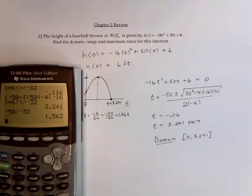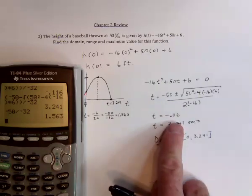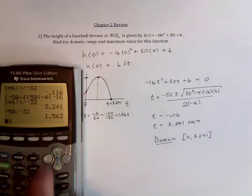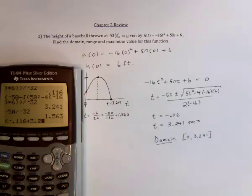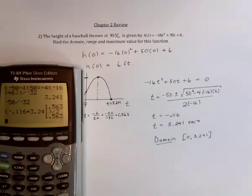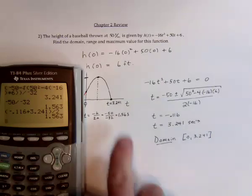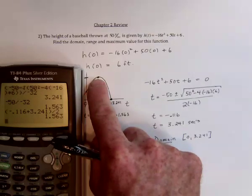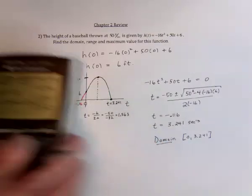And I just want to show you if I did it the other way and found the average of these two, it's going to end up with the same thing. So if you add negative 0.116 and 3.241 and divide them by 2 to find the average, you get the same thing. So that's going to be the moment after about one and a half seconds when the baseball is at the highest point.